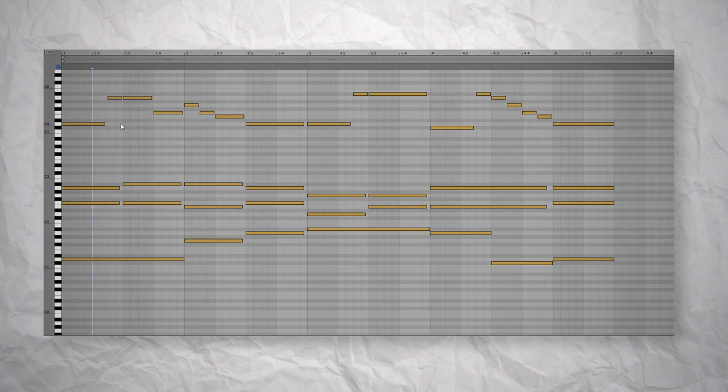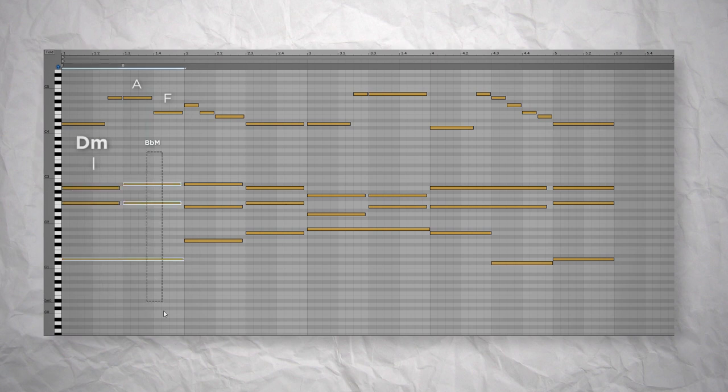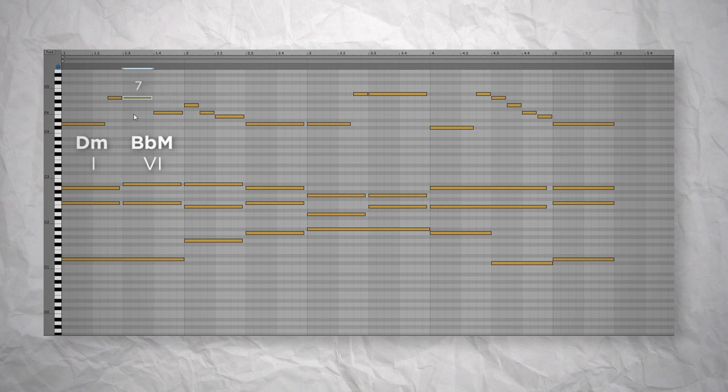For example at the end of the first bar we have an A and an F and I liked the change from a D minor chord to a B flat major chord there. But the A was not part of the chord B flat major, yet this is not a problem as this A can be considered as the major 7th of a B flat major chord. So that would turn the B flat major chord into a B flat major 7th chord.